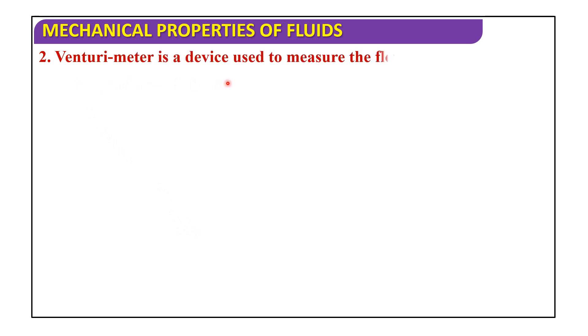Next. Venturi meter is a device used to measure the flow speed of: compressible fluid, volatile fluid, viscous fluid, or incompressible fluid. So, venturi meter is a device used to measure the speed of incompressible fluid.